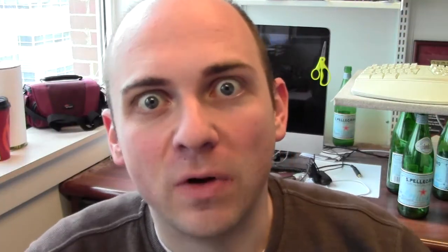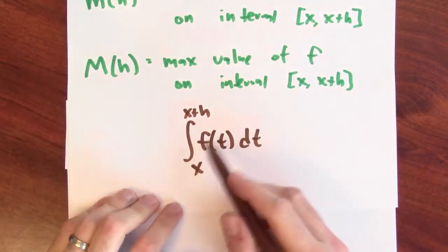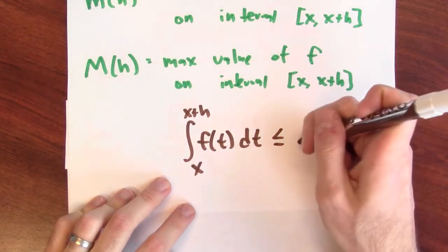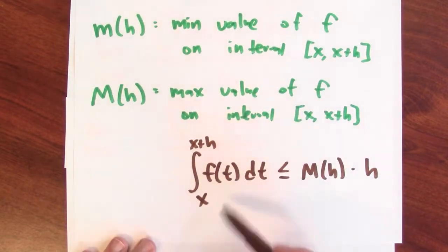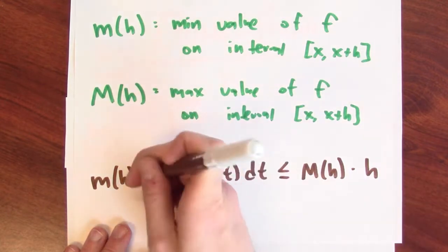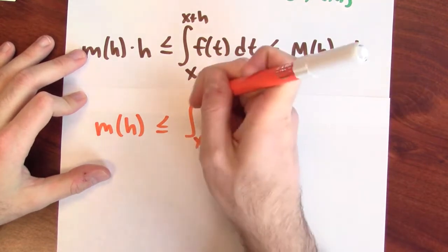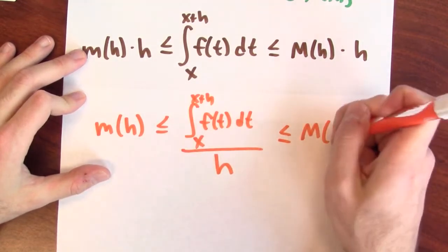This gives us a bound on the integral. Since the function little f has a maximum value of M(h) on this interval, the integral from x to x+h of f is no bigger than M(h) times h. And conversely, since the minimum value is m(h), that integral is at least as big as m(h) times h. Now dividing both sides by h — which doesn't affect the inequality since h is positive — gives us: m(h) ≤ [∫ from x to x+h of f(t) dt] / h ≤ M(h).